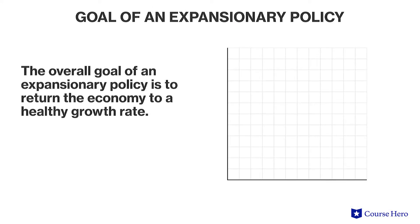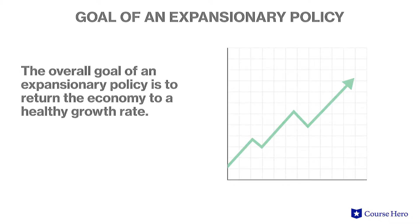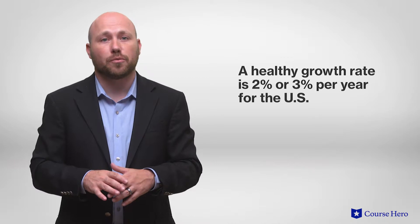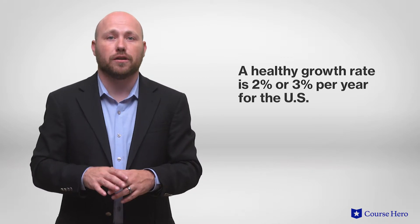Most government interventions take the form of measures that will increase spending and reduce taxes to boost aggregate demand. The overall goal of an expansionary policy is to return the economy to a healthy growth rate, the rate at which the economy is expanding at around 2% to 3% per year for the United States.